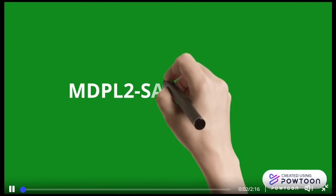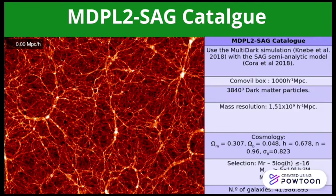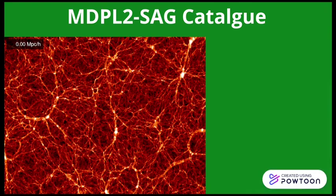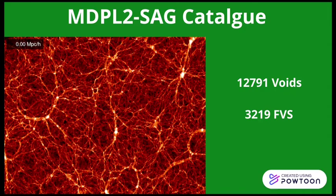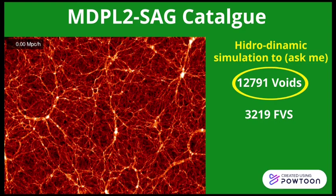The MDPL-SAG catalog. To study both regions, we used a dark matter simulation, the MultiDark, plus a semi-analytic model, and constructed a catalogue of semi-analytic galaxies, the MDPL-2-SAG. In this, we identified voids and FVS, obtaining this number of structures. For the voids, we can repeat all the measures in a hydrodynamic simulation, obtaining very similar results. But for reasons of time, I will not be discussing this further in this video, so you can always send an inquiry after this talk.